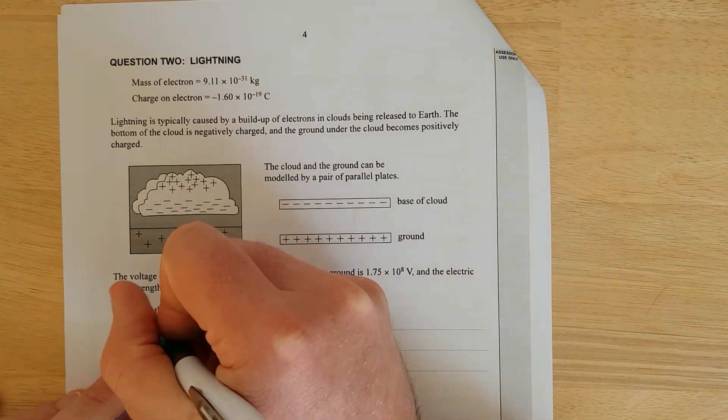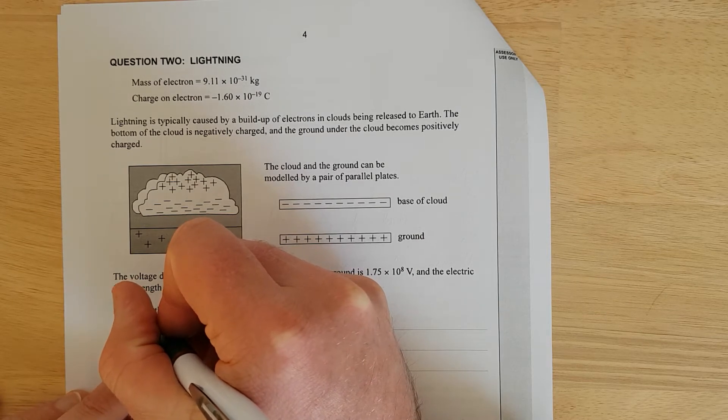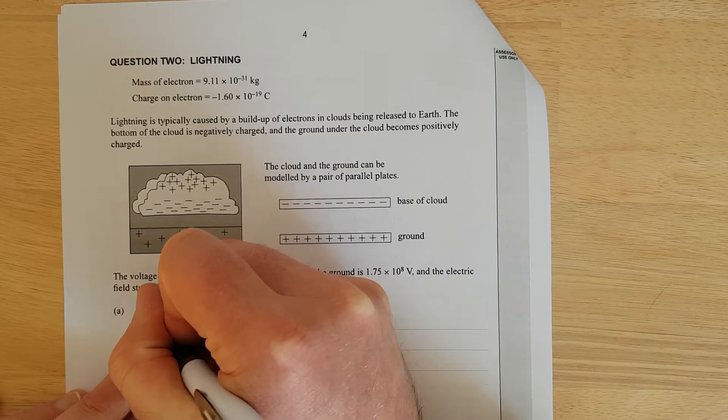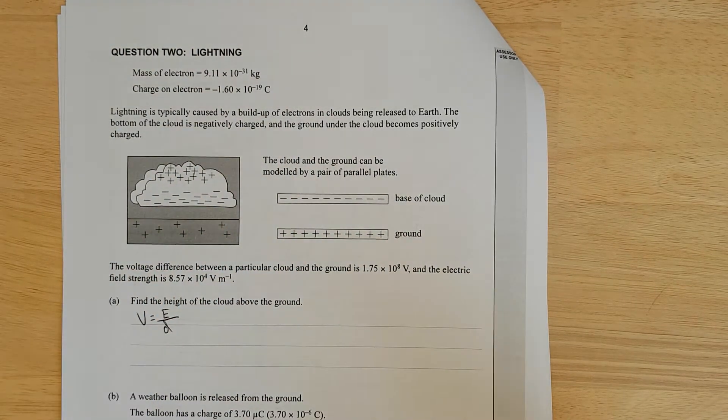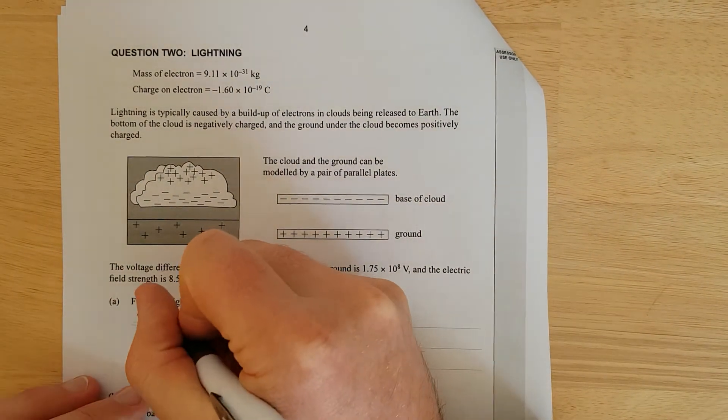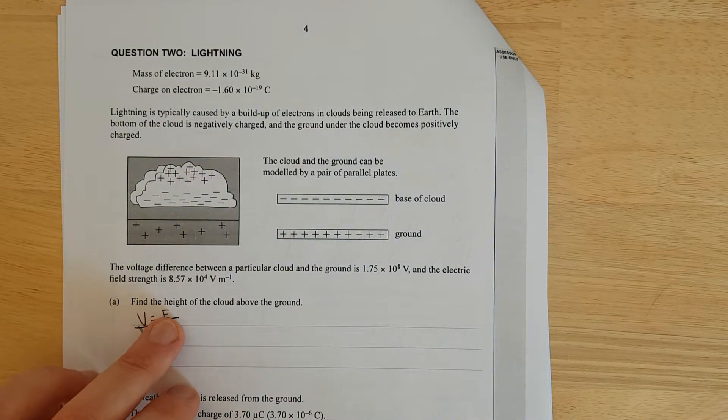In your formula sheet you should have the electric field, or voltage is equal to the electric field divided by the distance. Wait, it's not. It's volts per meter, so voltage over distance equals electric field.